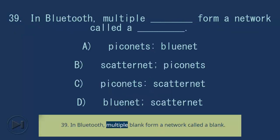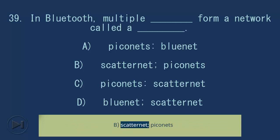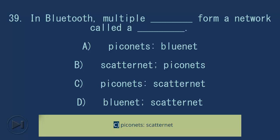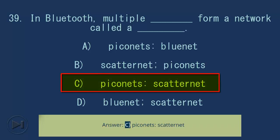Question 39: In Bluetooth, multiple blank form a network called a blank. A. Piconets, Bluenet; B. Scatternet, Piconets; C. Piconets, Scatternet; D. Bluenet, Scatternet. Answer: C. Piconets, Scatternet.